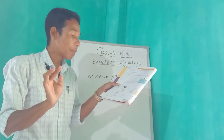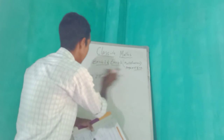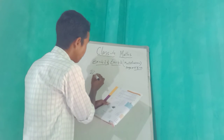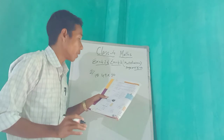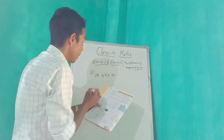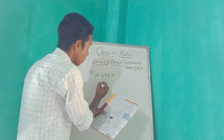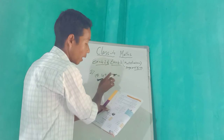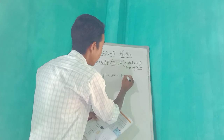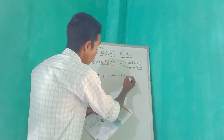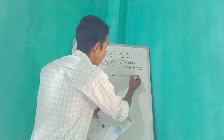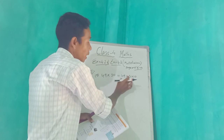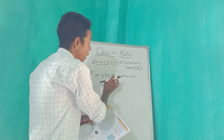Now I am going to show number 2: find the product. Number 2, number A: 49 into 30. How will we do this? 49 into 30 — 30 equals how much? 49 into 3 into 10. So this is 49 into 3 only, and the 0 means times 10.